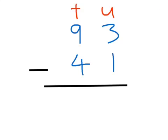I'll do a couple more examples. So this problem is 93 take away 41. I'm going to start with the column on the right, which is 3 take away 1. 3 take away 1 is 2. Then I move to the next column on the left, which is 9 take away 4. 9 take away 4 is 5. So the answer is 52.